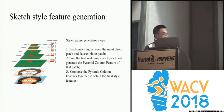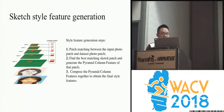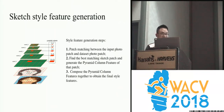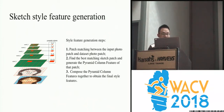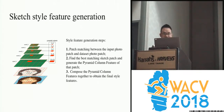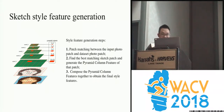The style feature generation generally has three steps. The first step is patch matching between the input photo and the dataset photo patches. The second is to find the best matching sketch patch, and then we generate patch features using these sketch patches. In order to preserve consistency between different layers, we propose a pyramid pooling feature, which composes different layer features together and formulates a complete sketch feature representation.